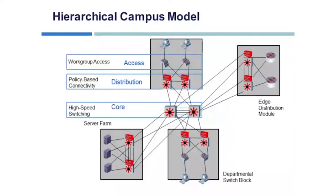The hierarchical campus model shows how workgroup access — different office rooms or departments — connects to access switches, which in turn connect to distribution switches in the hallways. The two switches shown are for redundancy. They then connect to core. High-speed switching at the core level means if the speed is 100 MPPS elsewhere, it should be 1,000 MPPS at the core; if it's 1,000 elsewhere, it should be 10,000 at the core — in other words, the core switching should be ten times faster than switching elsewhere.